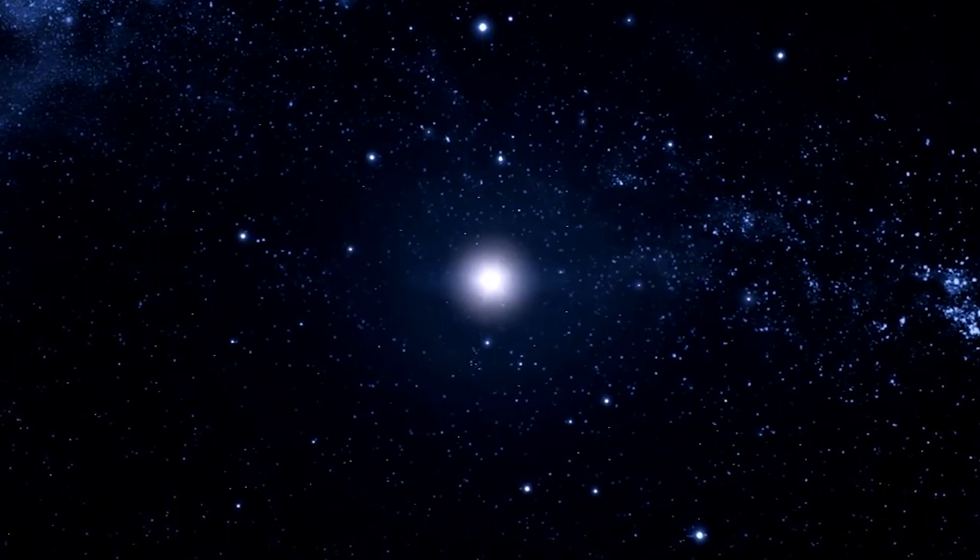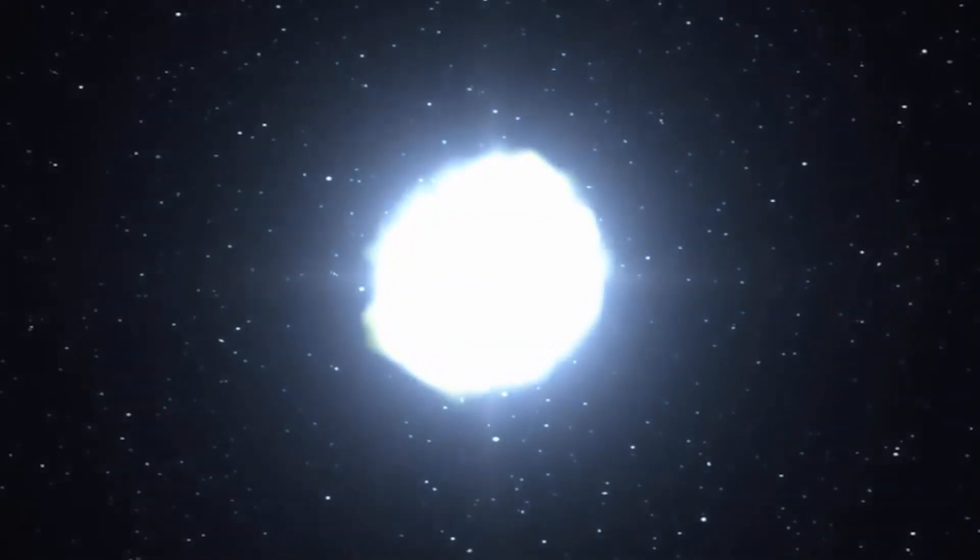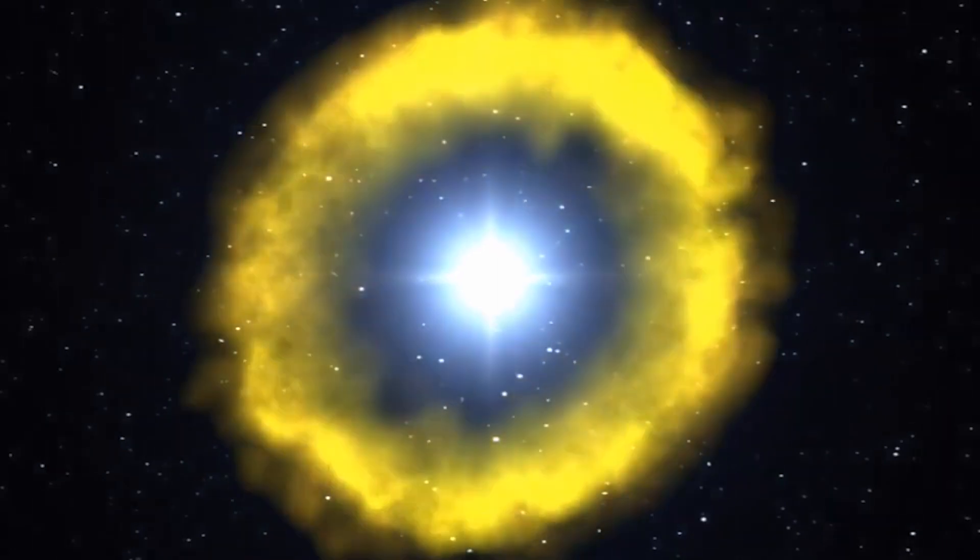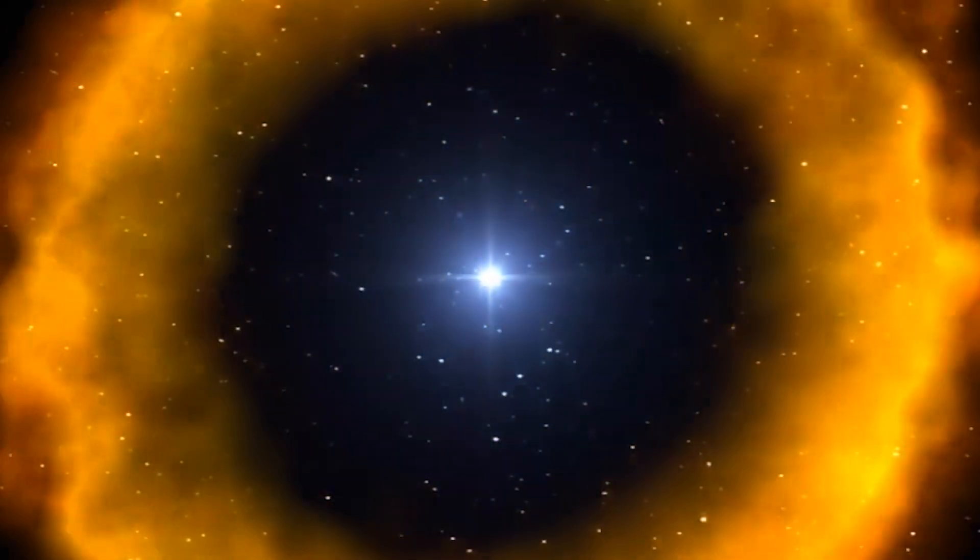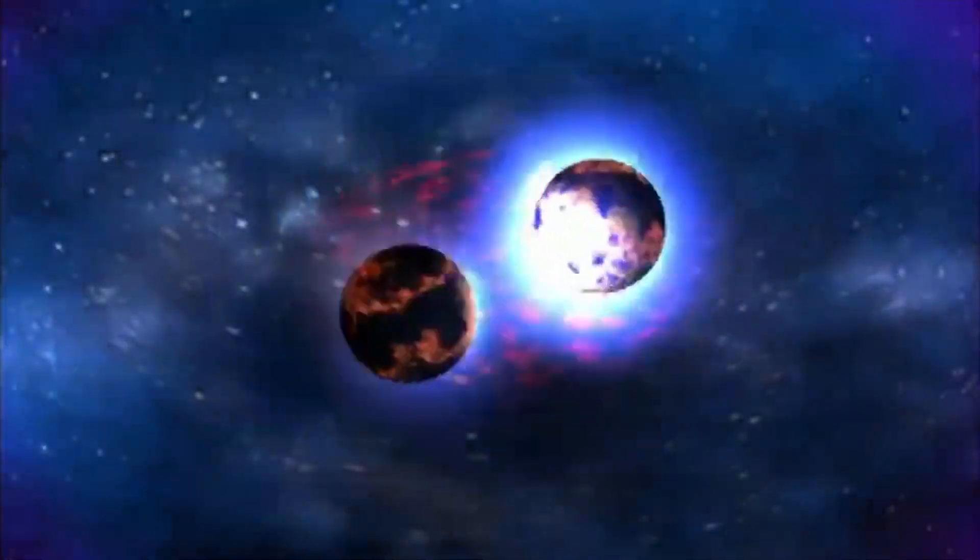Neutron stars are the remnants of catastrophic stellar explosions, known as supernovas, which occur when stars far bigger than our sun die. These tiny particles may weigh many times the mass of the sun, despite their enormous density. True to their namesake, neutron stars are basically kilometer-wide atomic nuclei composed nearly entirely of neutrons.